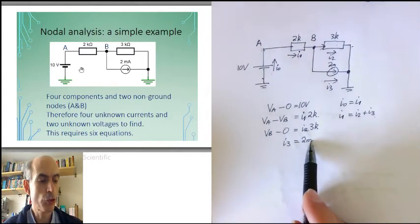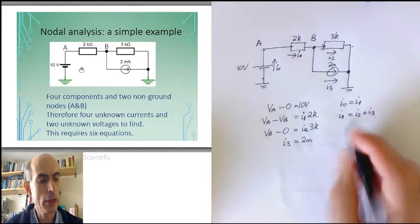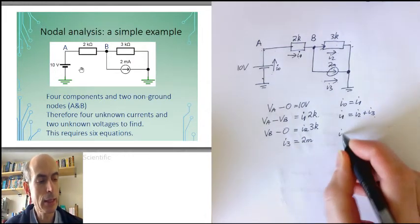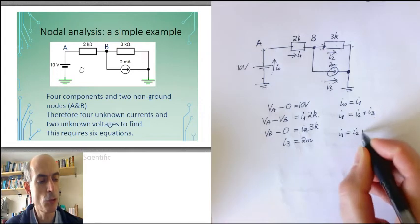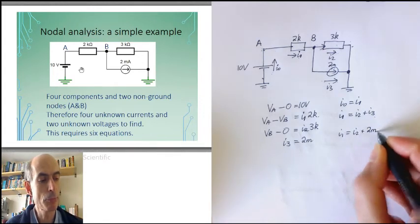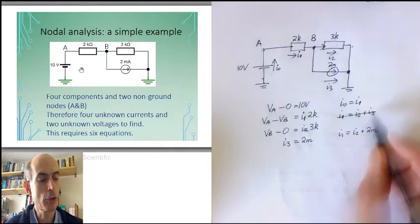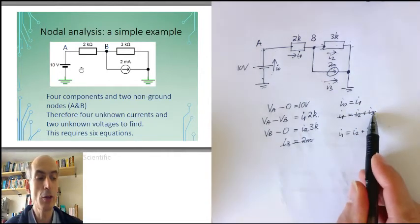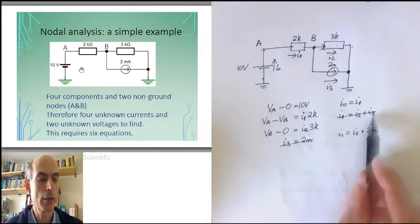I3 equals 2 milli, and I3 only appears here, so I could substitute this into this expression and get I1 equals I2 plus 2 milliamps. I can replace both of these equations with this one, and I've got rid of one equation and one unknown, I3.